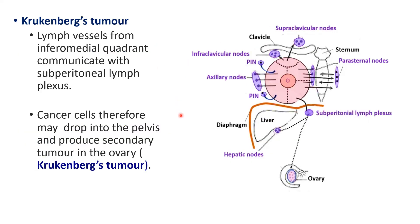Another tumor that may occur as a result of malignancy of the breast is a secondary tumor in the ovary, known as Krukenberg's tumor. From the lower medial quadrant, the lymph vessels communicate with the subperitoneal lymph vessels in the abdomen, and from here the malignant cells can reach the ovary and form secondaries, multiplying there to produce Krukenberg's tumor.